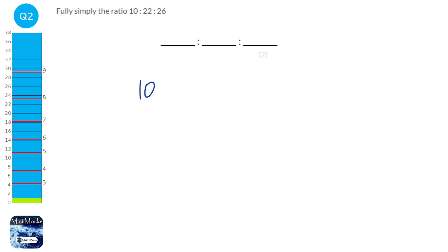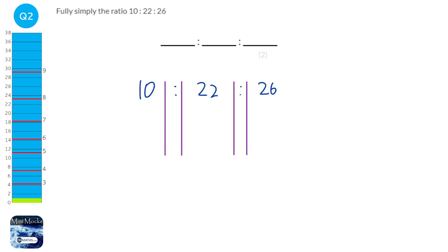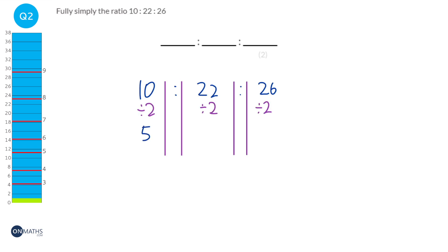So to simplify 10 to 22 to 26, I'm going to have to find something that I can divide the 10, the 22, and the 26 by. 10 can be divided by 5 but nothing else can; 22 can be divided by 11 but nothing else can; and 26 by 13 but nothing else can. The only thing we can divide all of them by is 2, so that will be 5 to 11 to 13.